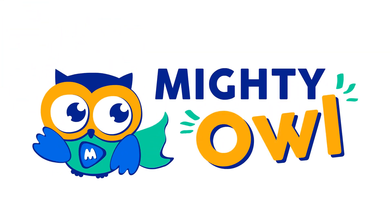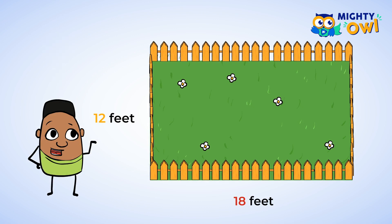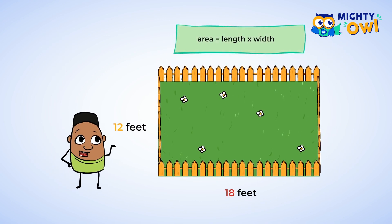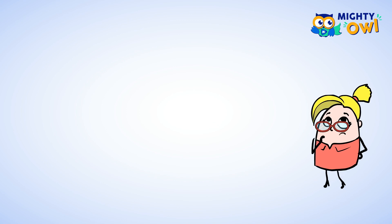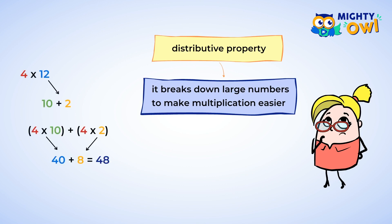Hello, this is MightyOwl. Look at the size of this yard — how are we ever going to be able to find the area? We know that to find the area of a rectangle we can multiply the length and the width, but those numbers are pretty big. Do you remember learning about the distributive property? We used it to break down large numbers to make multiplication easier. I bet we can use the distributive property to find the area of large rectangles. Let's try it out and see if I'm right.